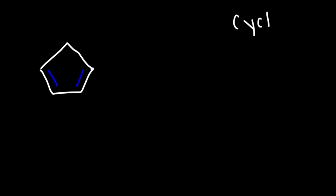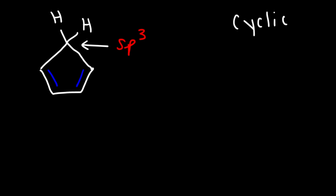For the next example, let's discuss cyclopentadiene. Do you expect this molecule to be aromatic, anti-aromatic, or non-aromatic? This molecule is cyclic, and we do have some conjugation — alternating single and double bonds. However, it's not completely conjugated; notice that we have an sp3 carbon here. That carbon atom doesn't have a p-orbital where the pi electrons can resonate through. As a result, it's not going to be aromatic or anti-aromatic — this molecule is non-aromatic.